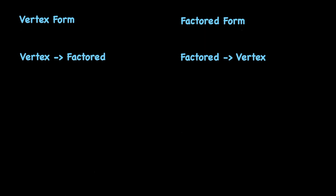Let's first recall the basic formulas for vertex and factored form. Vertex form is f(x) = a(x - h)² + k, where the coordinate (h, k) is the vertex of the parabola. Factored form is f(x) = a(x - r₁)(x - r₂), where r₁ and r₂ are roots of the quadratic function.